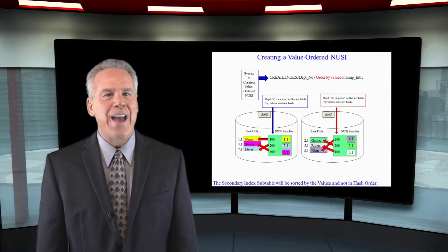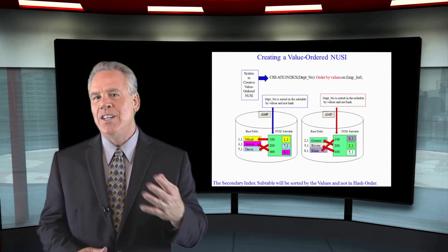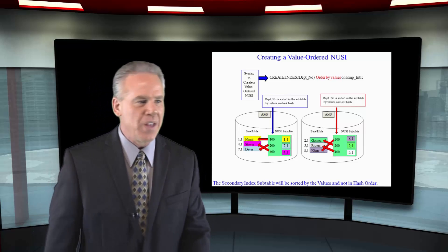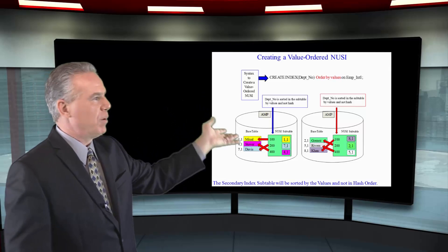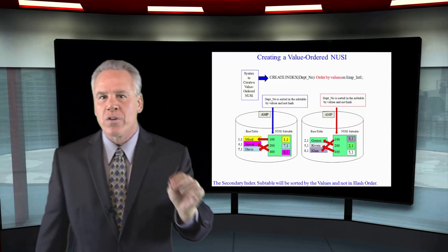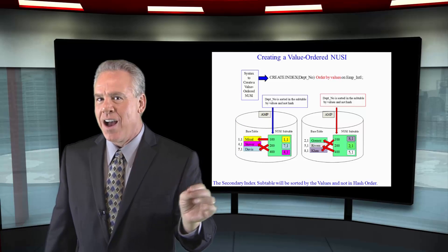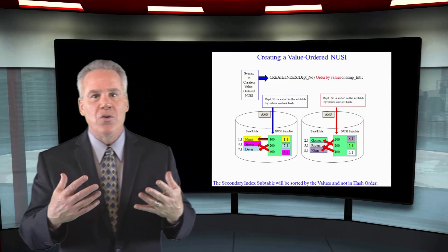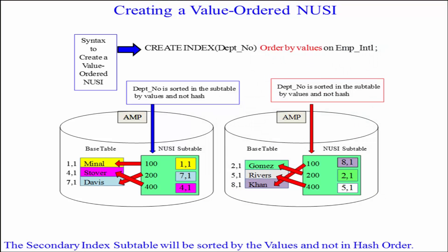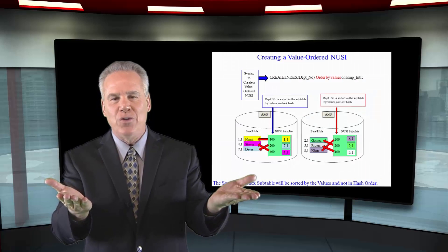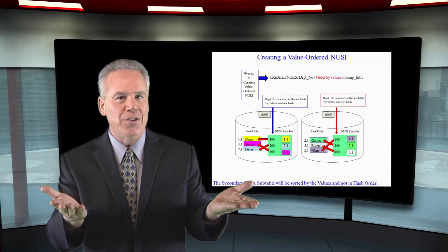Here I'm creating a value ordered NUSI. The syntax is: CREATE INDEX, open paren, DEPNO, close paren, ORDER BY VALUES ON EMP International. This creates a non-unique secondary index and a subtable, but instead of ordering the subtable by row ID, it orders the subtable on each AMP by the value — in this case department number. This was Teradata's first attempt to do some sort of partitioning for range queries.